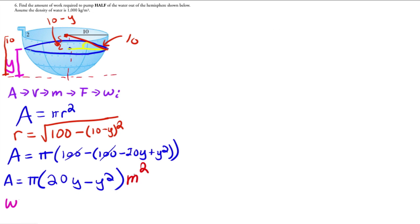So the work to get the slab out is going to be pi times (20y minus y squared) meter squared, and then I'm going to multiply that times delta y meters, which is going to give me volume, and then multiply that by the density, which is 1000 kilograms per meter cubed, which is going to give me the mass.